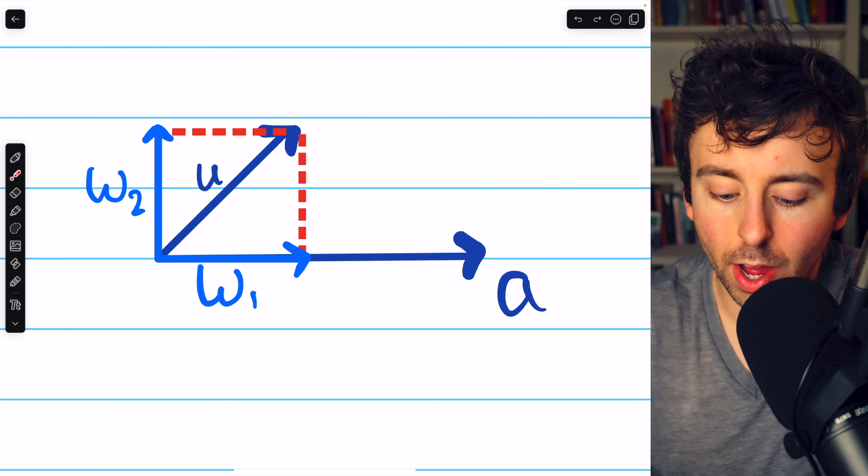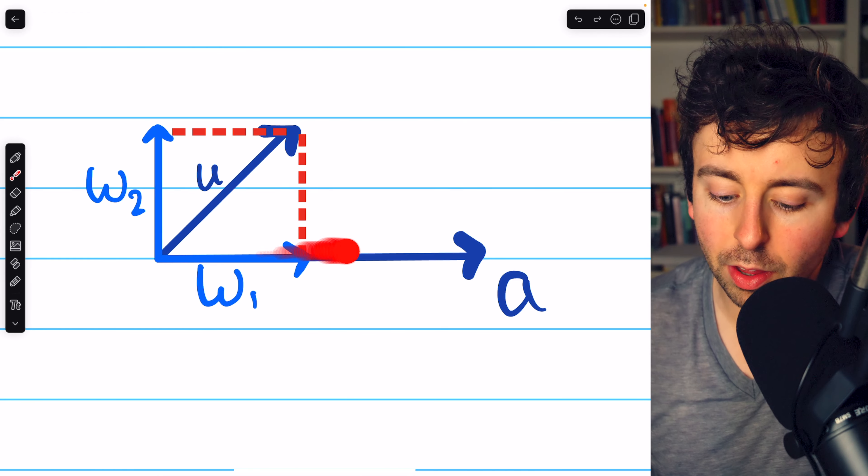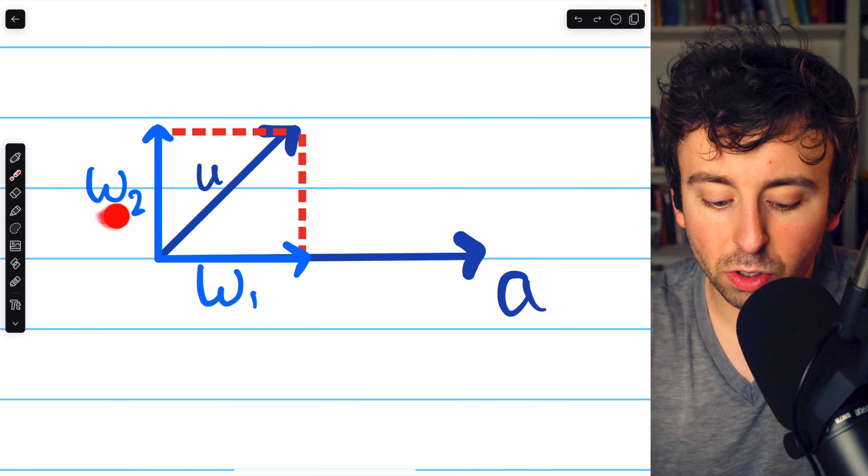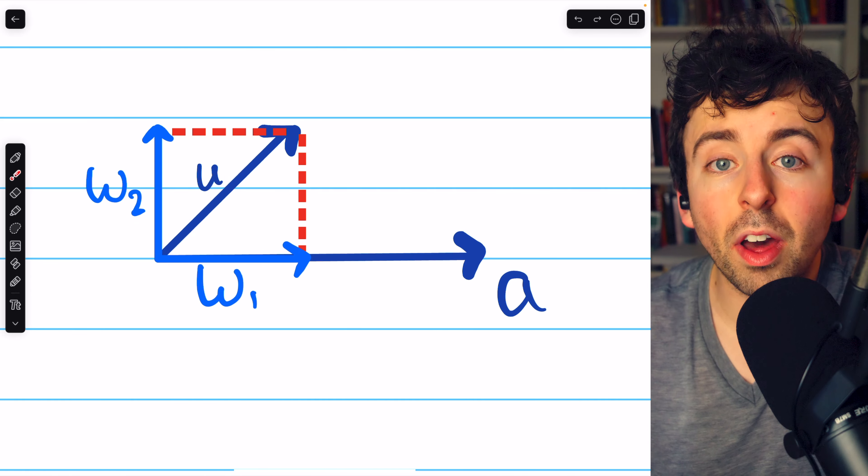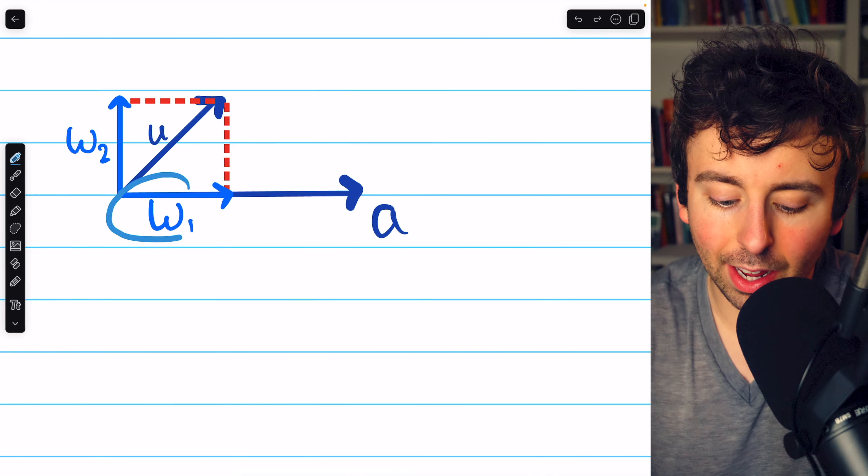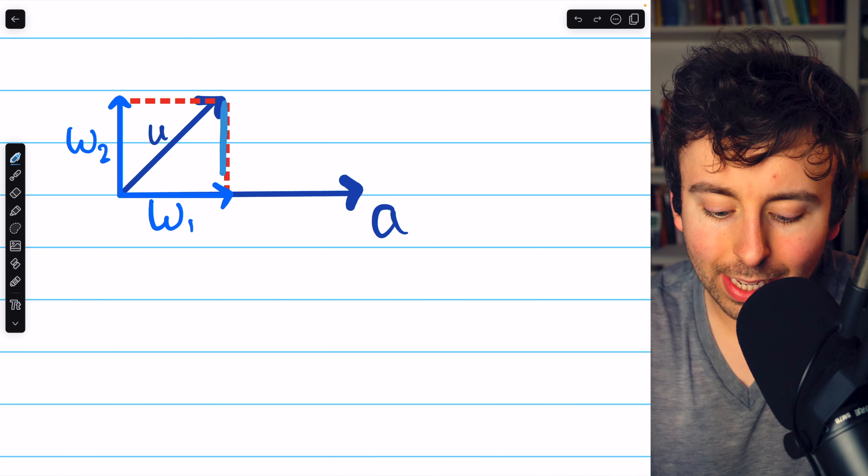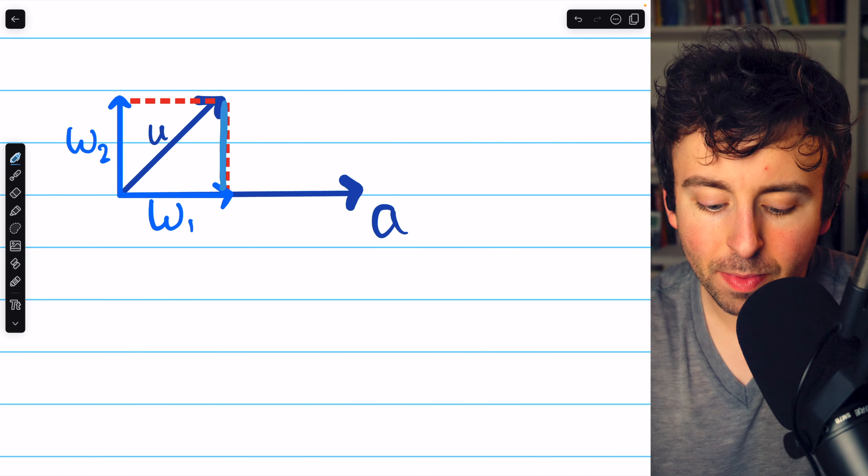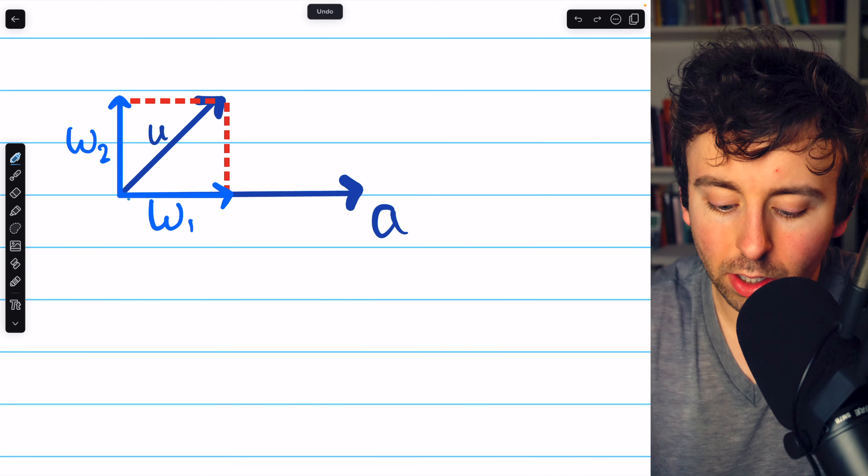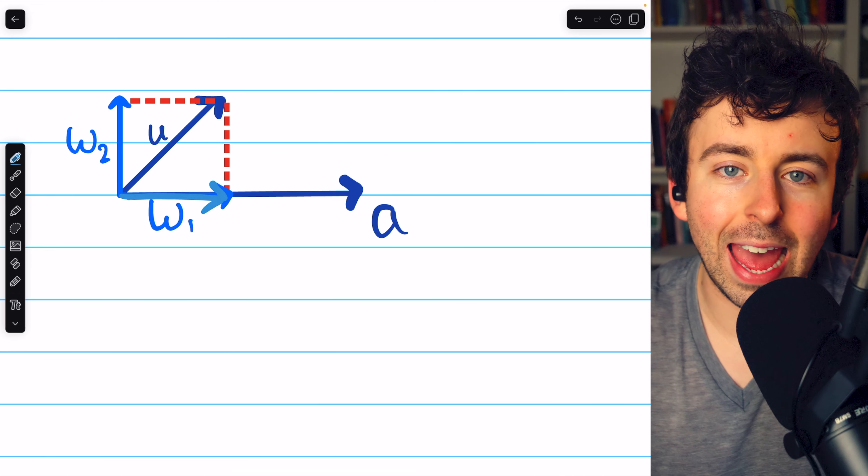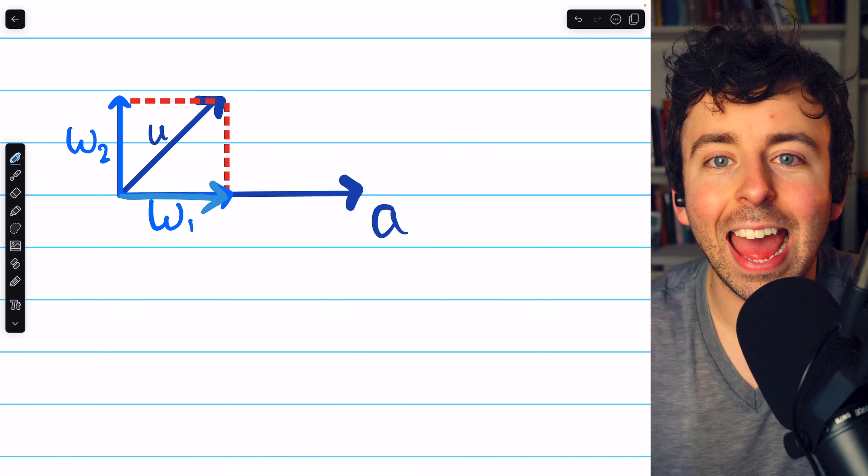This vector w1 is called an orthogonal projection of u onto the vector a, and w2 is the vector component of u orthogonal to a. Let's go over how to find the length of this vector w1. This is like the shadow of u cast on the vector a, or the amount that u goes in the direction of a. It's the vector component of u along a.